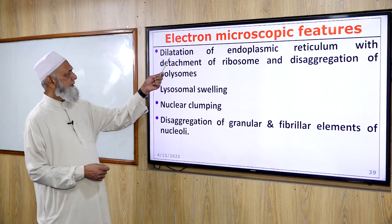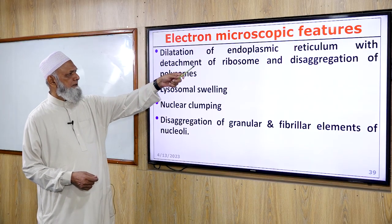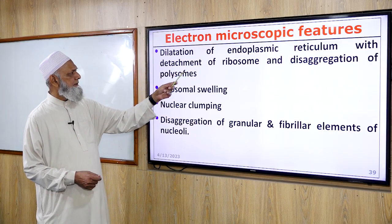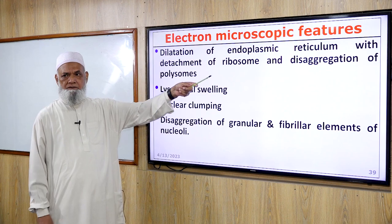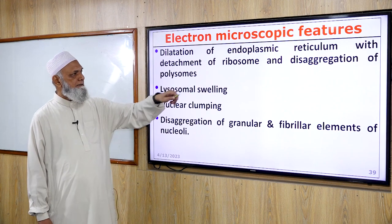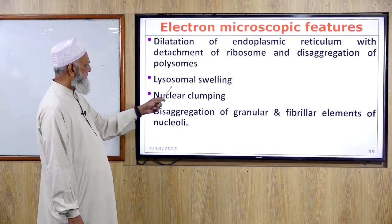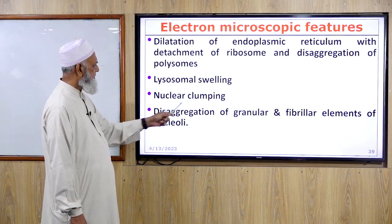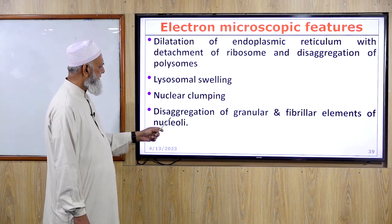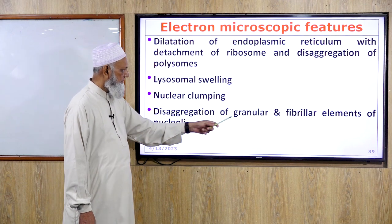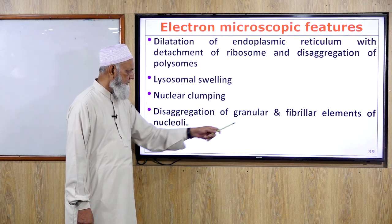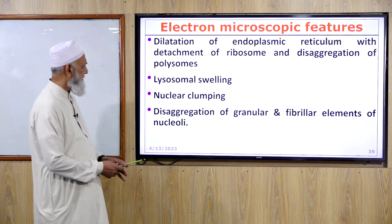Electron microscopy features of reversible injury: dilatation of the endoplasmic reticulum with detachment of ribosomes and disaggregation of polysomes, lysosomal swelling, nuclear chromatin clumping, and disaggregation of granular and fibrillar elements of the nucleolus.